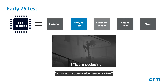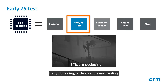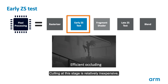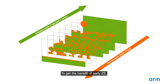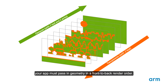After rasterization, early ZS testing — depth and stencil testing — discards pixels that are hidden by other objects or stencil masks. This is relatively inexpensive because it happens before any pixels are coloured in. Here's a tip: to get the benefits of early ZS, your app must pass in geometry in a front-to-back render order, starting at the point closest to the camera and moving further away.